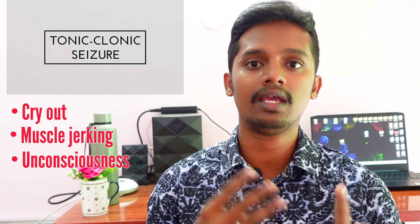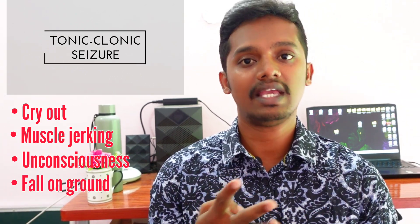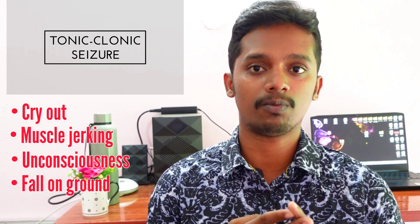Now let's look at the signs and symptoms of each type. In generalized seizures, starting with tonic-clonic seizure — also called grand mal seizure or grand mal epilepsy — the person first cries out, then has muscle spasms and loses muscle control, followed by loss of consciousness, and they fall to the ground. These are the signs and symptoms of tonic-clonic seizure.